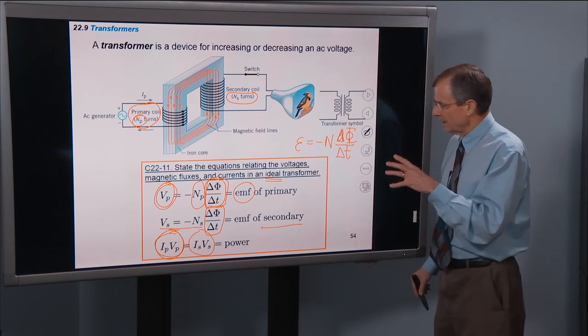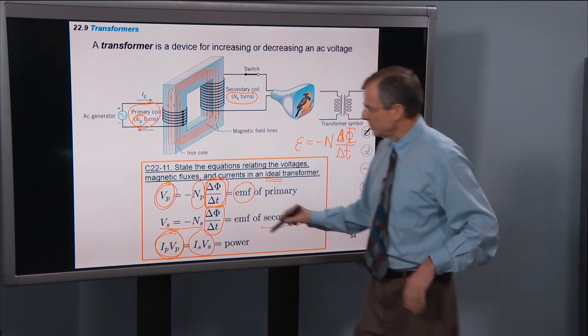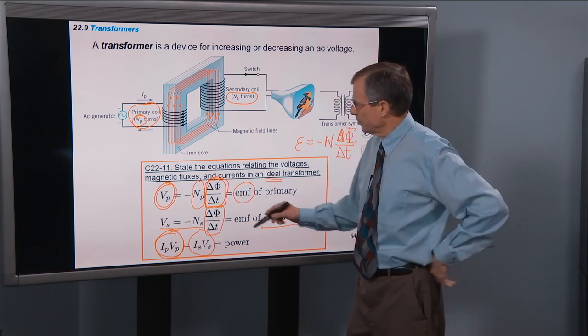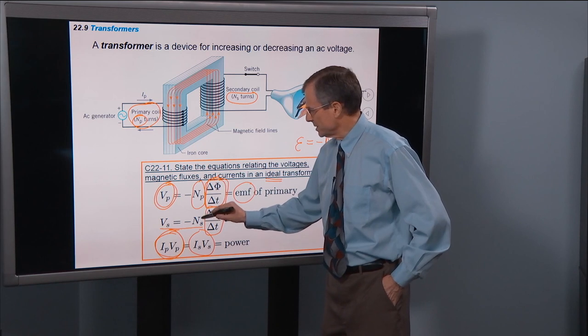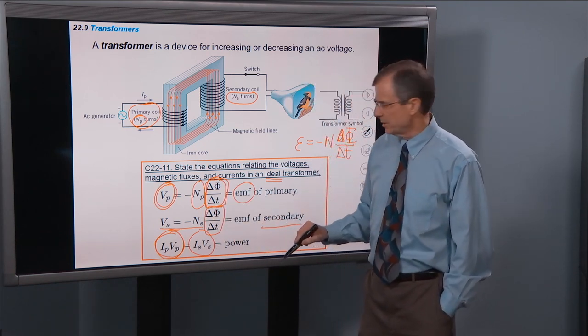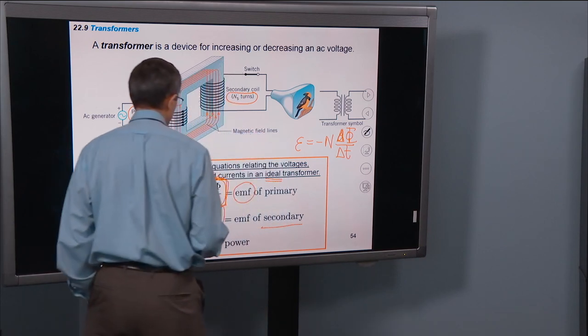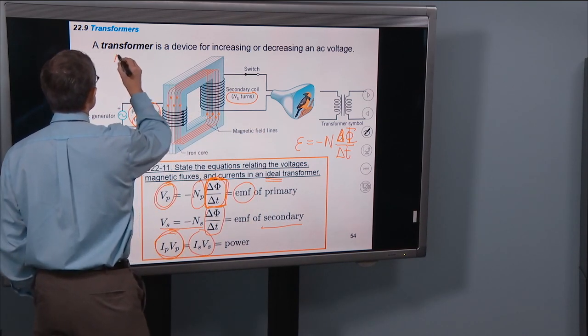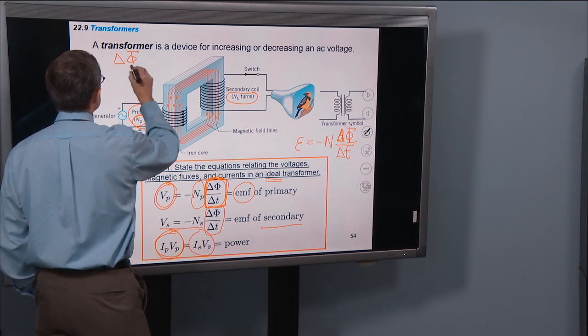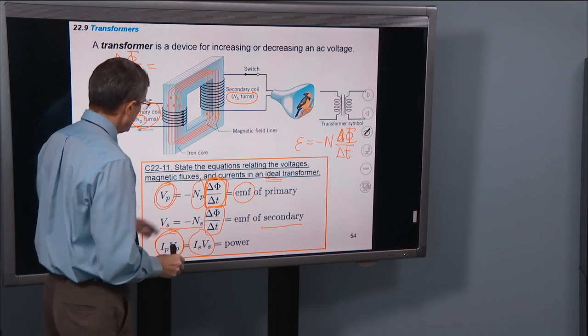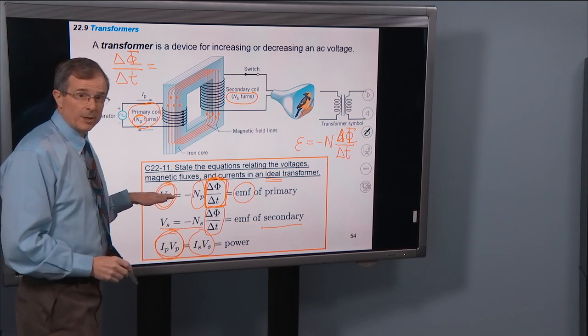A lot of times it's useful, and we'll use it in an example coming up in a slide or two, to relate the voltages and the numbers of turns. And the way that this is done is to solve this equation for Δφ by Δt.